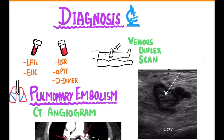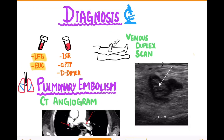To clinch the diagnosis of DVT, we first do serological tests such as liver function test and electrolyte, urea, and creatinine to identify factors which might have precipitated DVT. Parameters such as international normalized ratio (INR) and activated partial thromboplastin time give us some idea about clotting abnormalities present in the body. Elevated D-dimer values indicate the presence of a clot within the body.